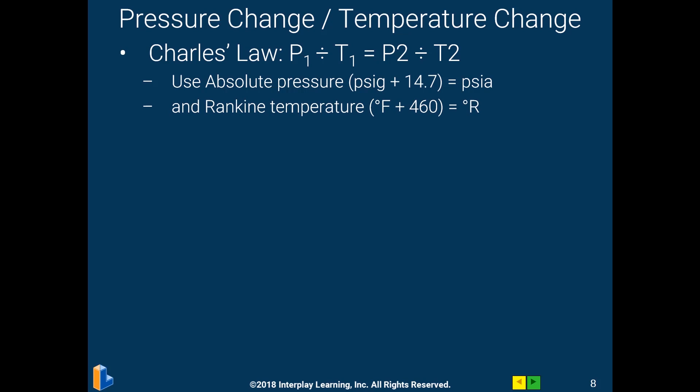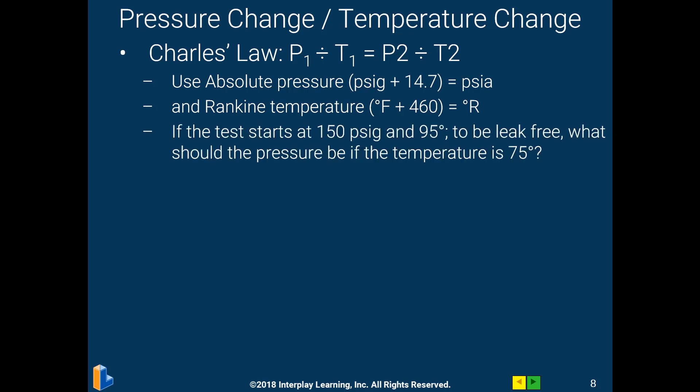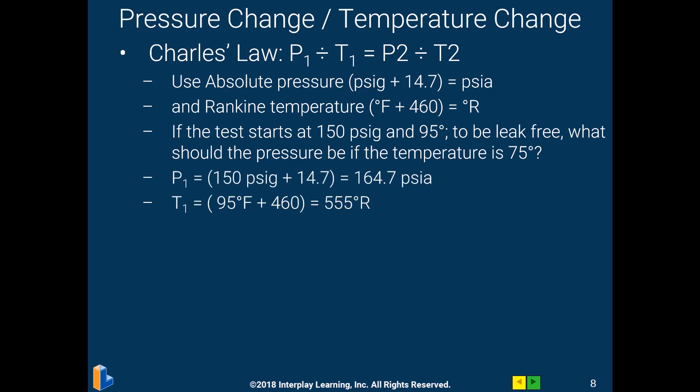Converting to absolute pressures and Rankine temperatures is a challenge, let alone doing the algebra required for this calculation. The question is: can we actually compute what the pressure is going to end up at when we start off at 150 PSIG at 95 degrees? What should our pressure be when it's only 75 degrees? Once you convert the initial pressures and temperatures to absolute pressure and Rankine, the thing we don't know is the pressure on the system the next morning.